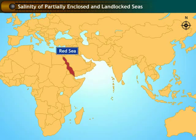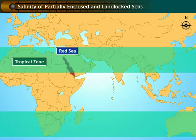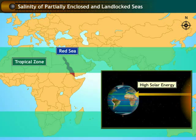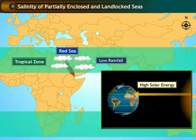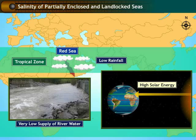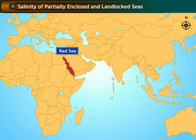The Red Sea, located in the tropical region, also receives a good amount of sunlight. However, the rainfall is low and the supply of fresh water is very low. Hence, the average salinity of the Red Sea is 41 parts per thousand.